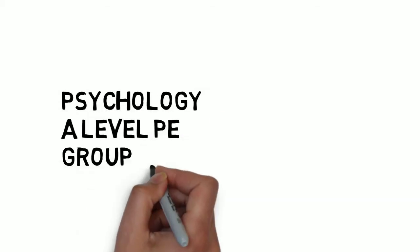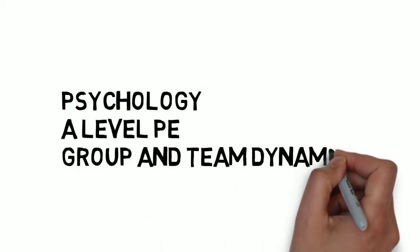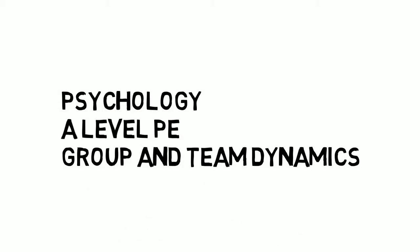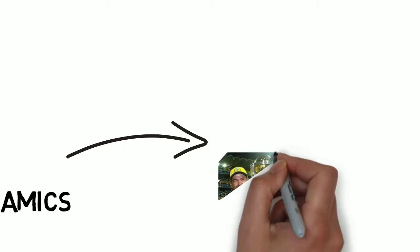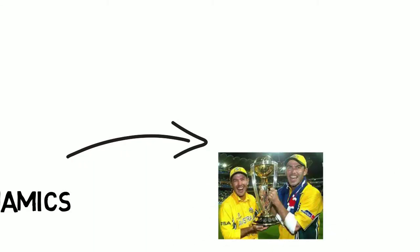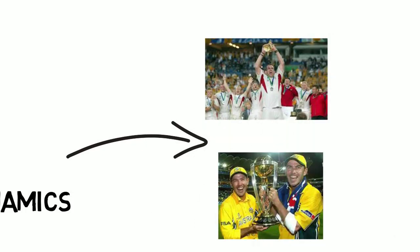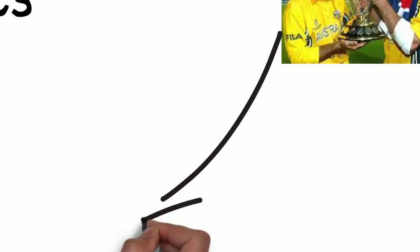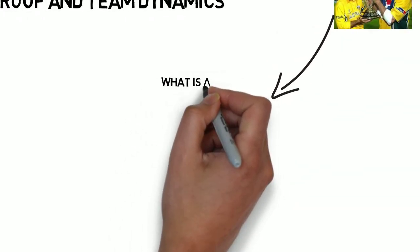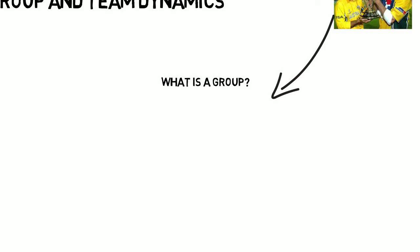Welcome to another screencast for A Level PE. In today's session we're looking at group and team dynamics. What is it that makes an effective team? What makes World Cup winning teams like the 2003 rugby team for England, and how is that group formed? First and foremost, what we've got to ask is: what is a group?